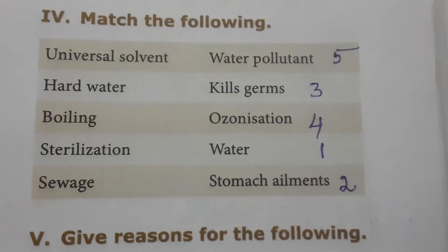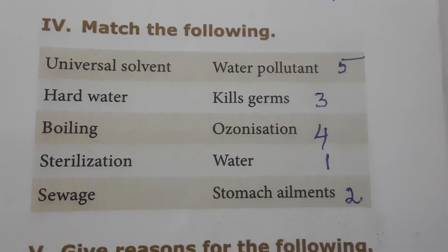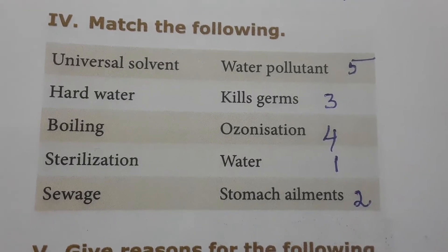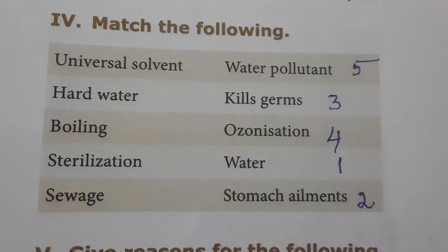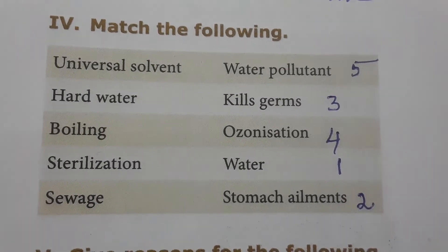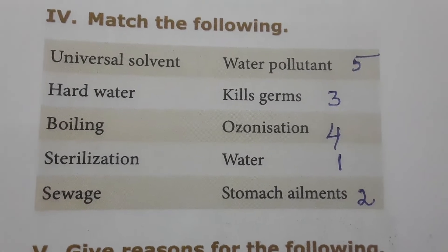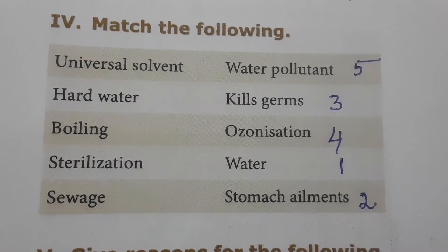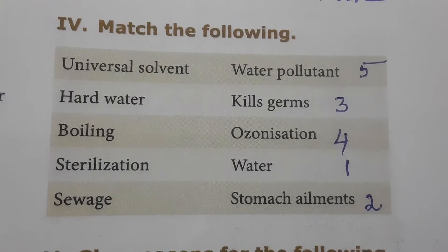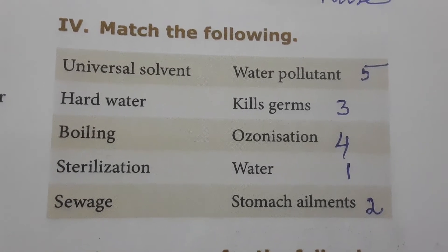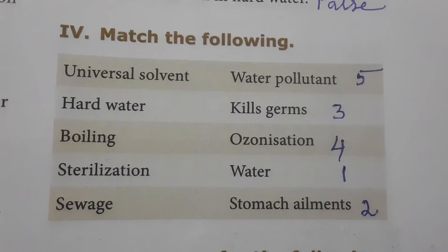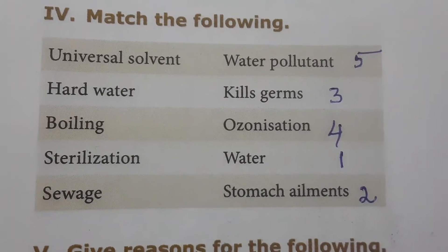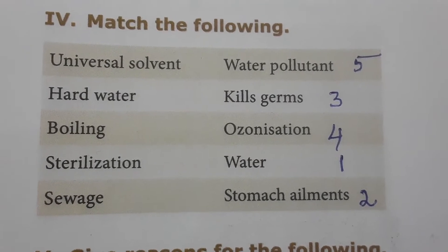Match the following: Universal solvent — Water, because water can dissolve more amount of solutes when compared to other solvents, making it a universal solvent. Hard water — when consumed continuously, it gives stomach ailments. Boiling — when you boil water it kills germs present in the water, so boiling is always recommended for drinking. Sterilization — the process by which you can kill germs.